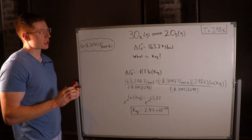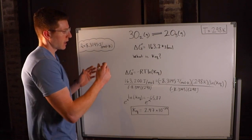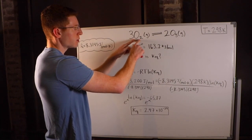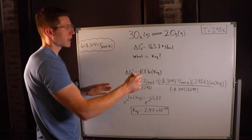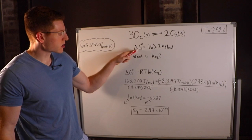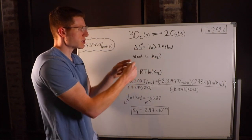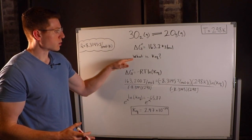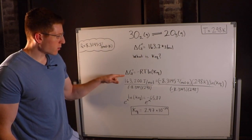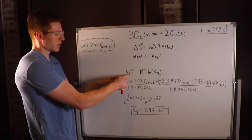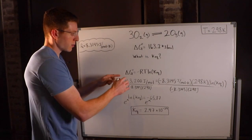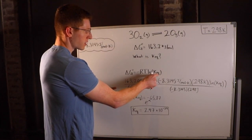Let's see those equations in action. The reaction is 3O₂(g) → 2O₃(g). At 298 Kelvin, delta G° is +163.2 kilojoules per mole. We want to find K_eq. We use the equation delta G° = -RT ln(K_eq) and simply plug in all variables and solve for K_eq.